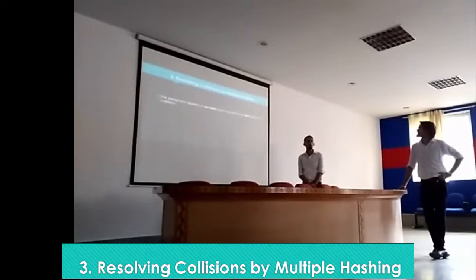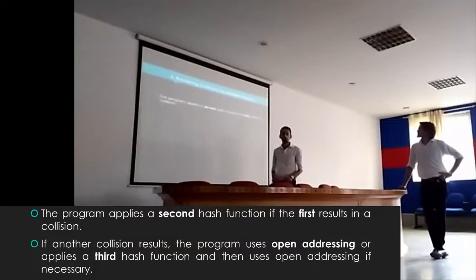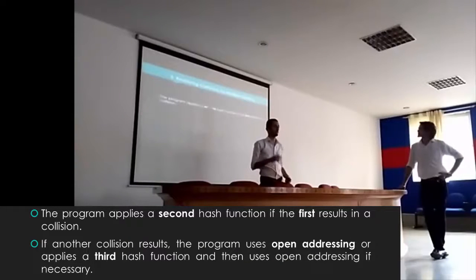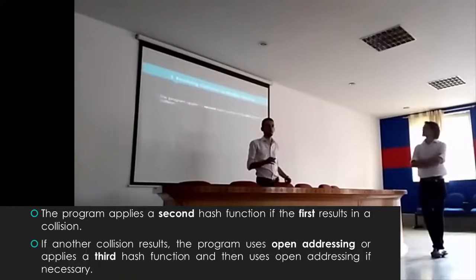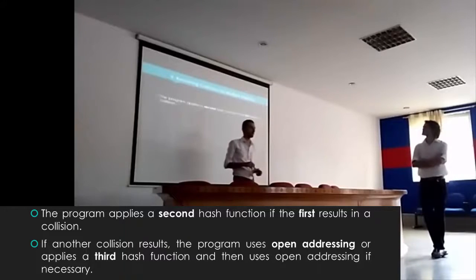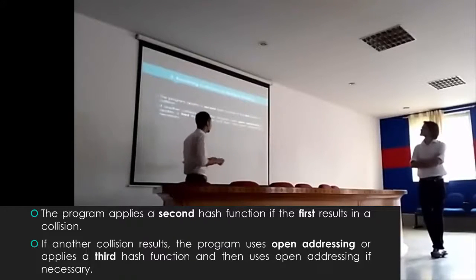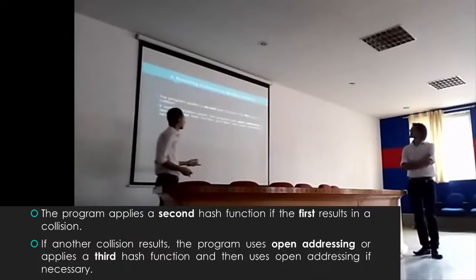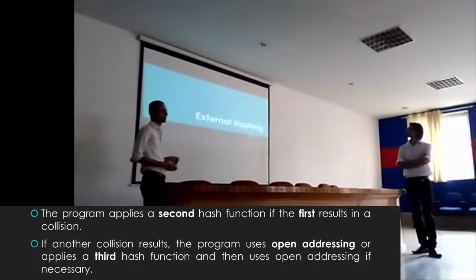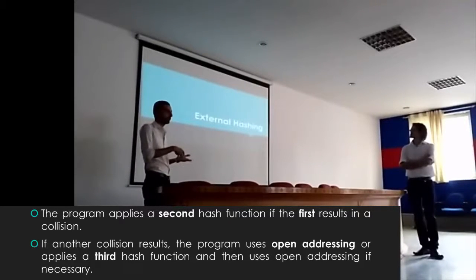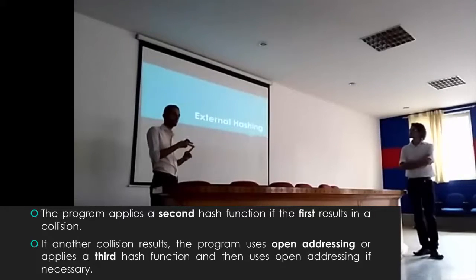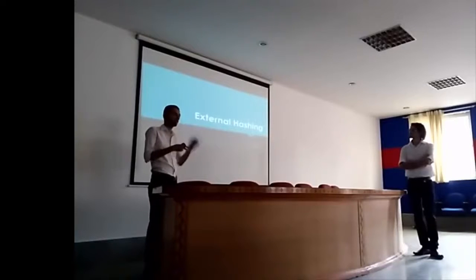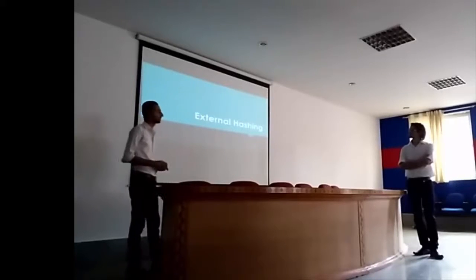The third method is multiple hashing. We use a primary hash function first. If this main function causes a collision, we have the option to use a second hash function — for example, instead of dividing by 10, we divide by 11. If the second hash function also fails, we can then use open addressing or apply a third hash function. We keep doing the same thing: if the main function fails, use another one; if that fails, use open addressing or a third function; if the third fails, repeat the sequence. This is called multiple hashing.